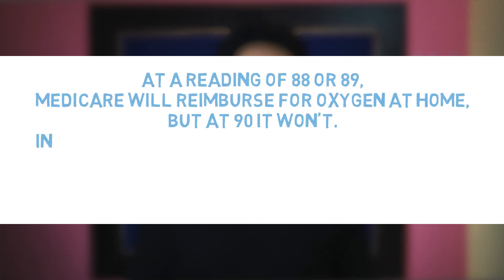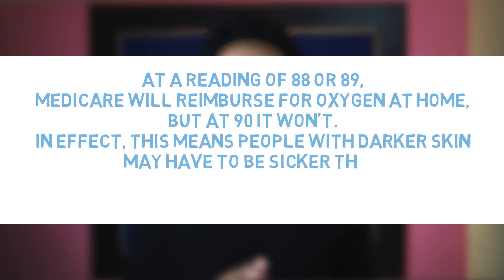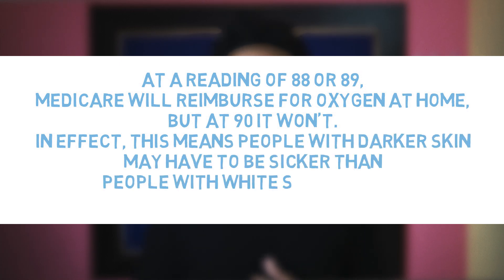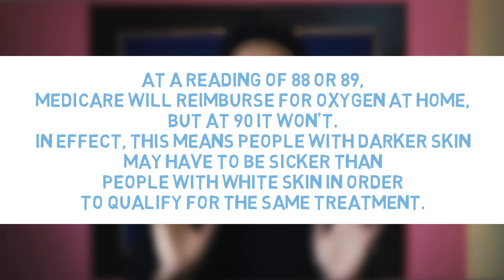These concerns don't end with clinical practice. Medical reimbursement also uses the pulse oximeter as a key threshold. At a reading of 88 or 89, Medicare will reimburse for oxygen, but at 90 it won't. In effect, this means people with darker skin may have to be sicker than people with white skin in order to be equally treated.